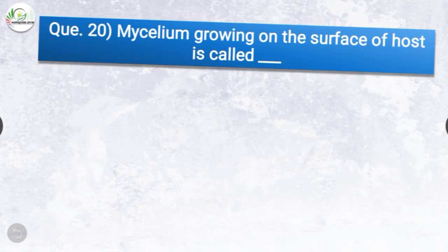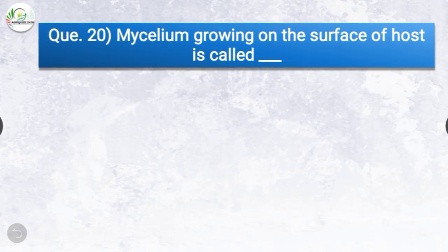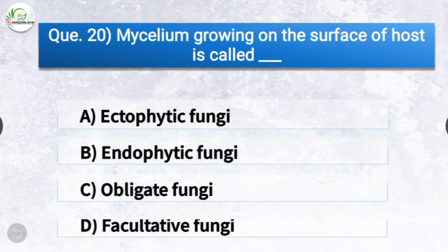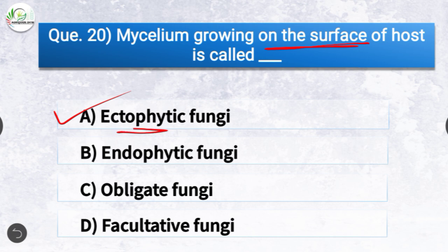Question number twenty: Mycelium growing on the surface of the host is called dash. The options are ectophytic fungi, endophytic fungi, obligate fungi, or facultative fungi. The correct answer is option A, ectophytic fungi. Mycelium growing on the surface of the host is called ectophytic fungi, whereas fungi growing inside the host is called endophytic fungi.